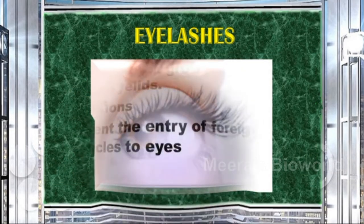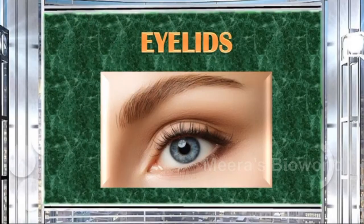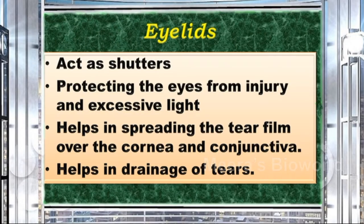Eyelashes are the hairs that grow on the edge of the eyelids. Their main function is to prevent the entry of foreign particles into the eyes. Eyelids act as shutters, protecting the eye from injury and excessive light. They help in spreading the tear film over the cornea and conjunctiva, and also aid in the drainage of tears.